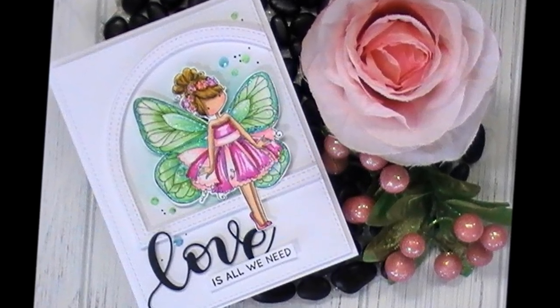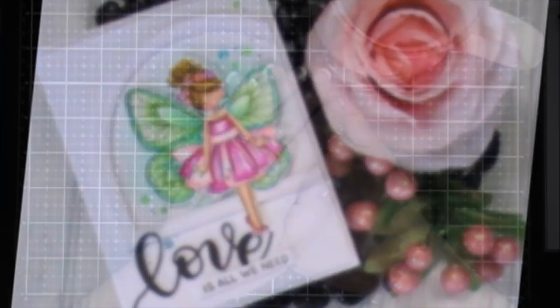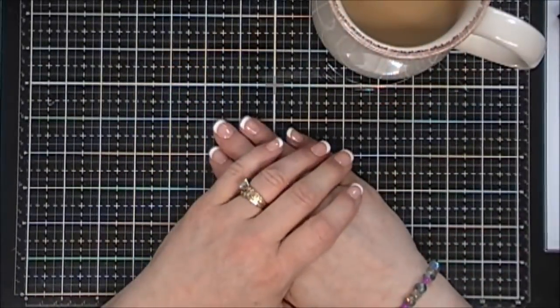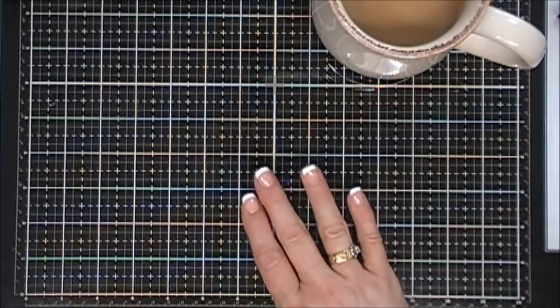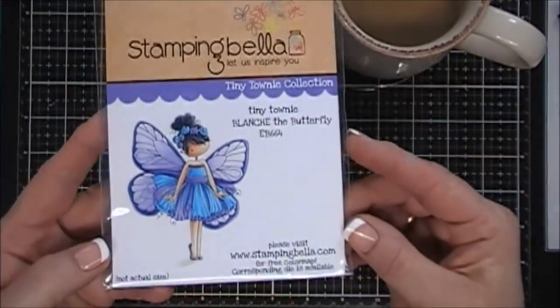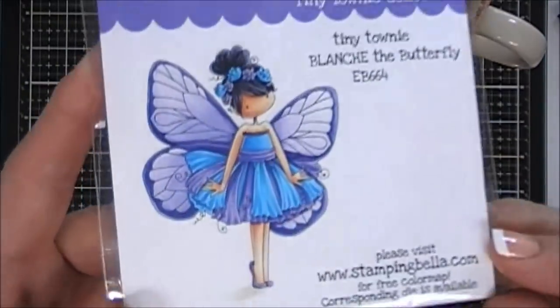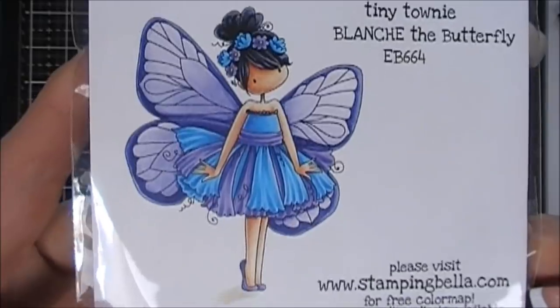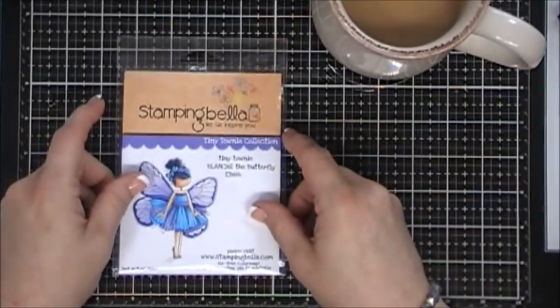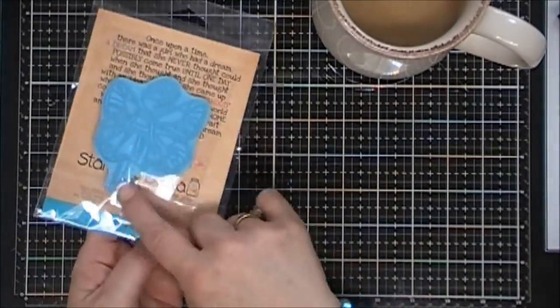Hello everyone, I hope you're having a lovely day. Thank you so much for joining me today. I'm doing a Scrapping for Less design team project using this adorable stamp set. It's from Stamping Bella and she's called Blanche the Butterfly. She's part of the Tiny Townie collections and she is gorgeous.